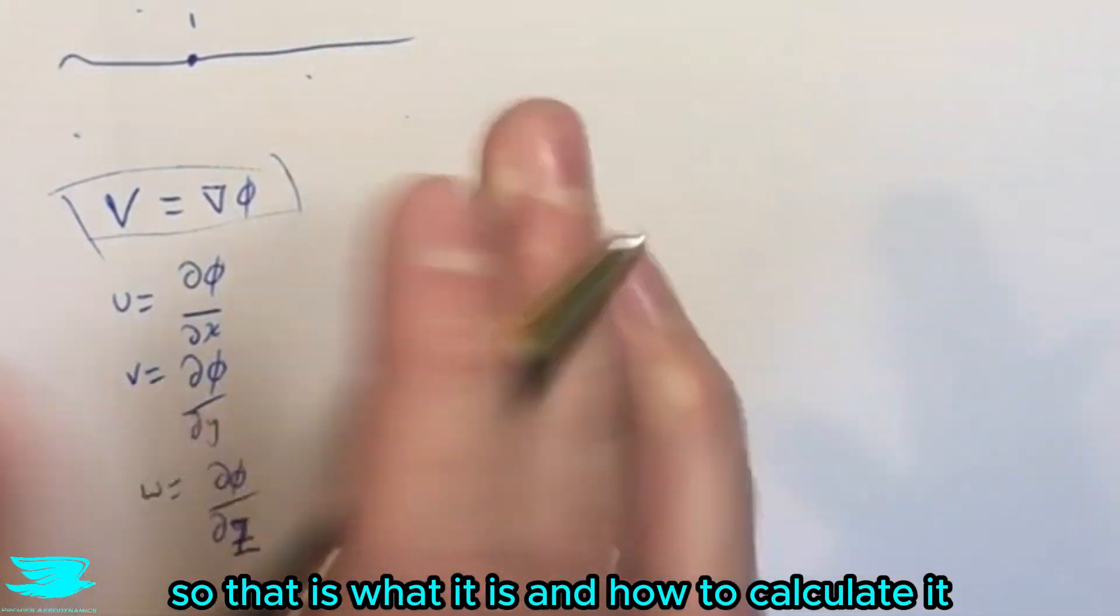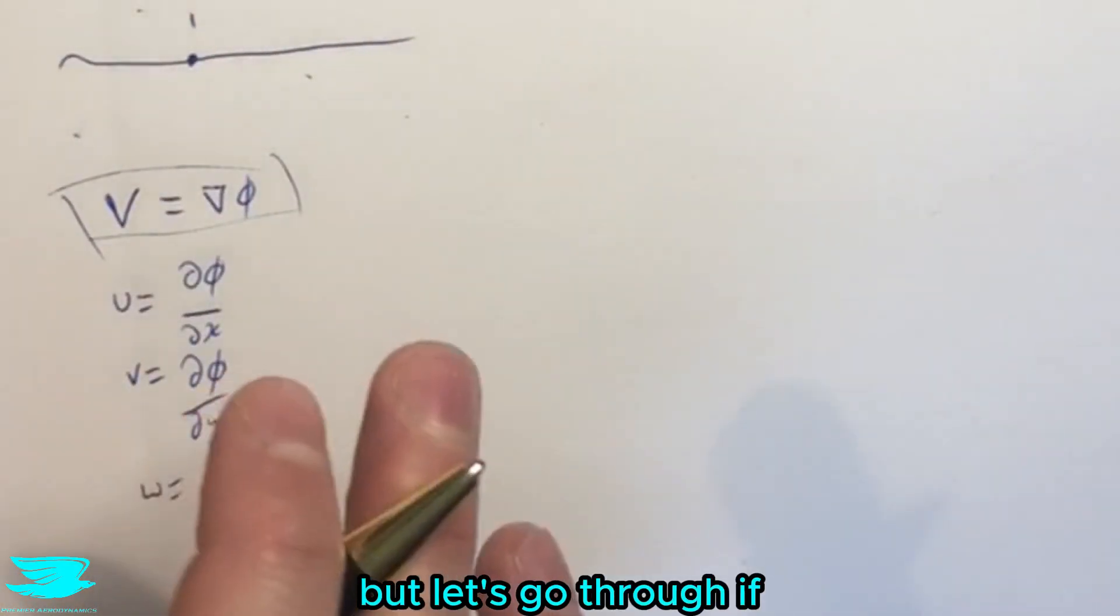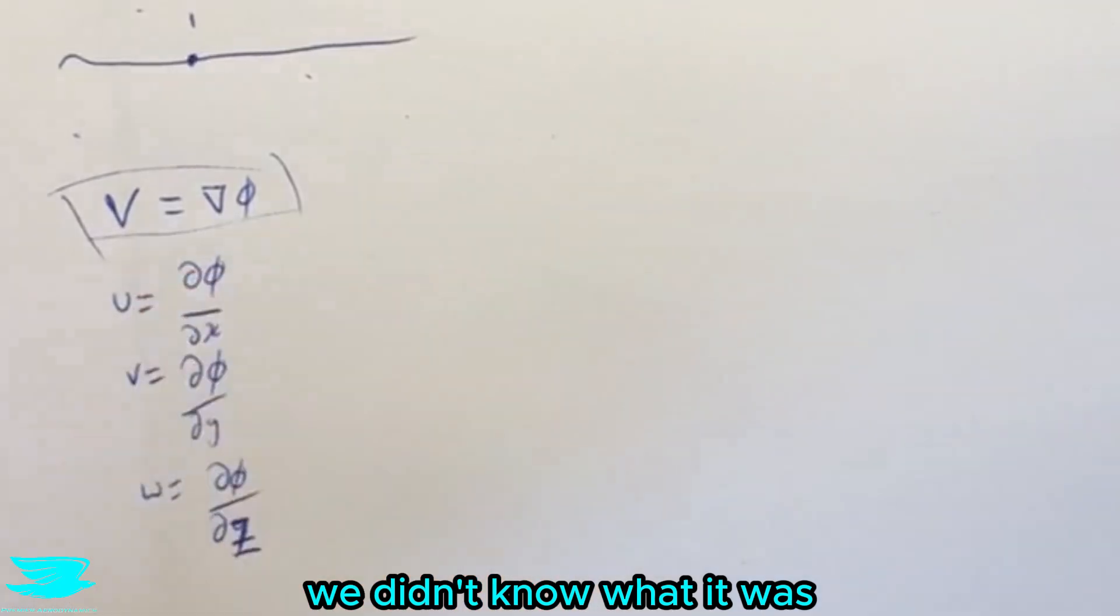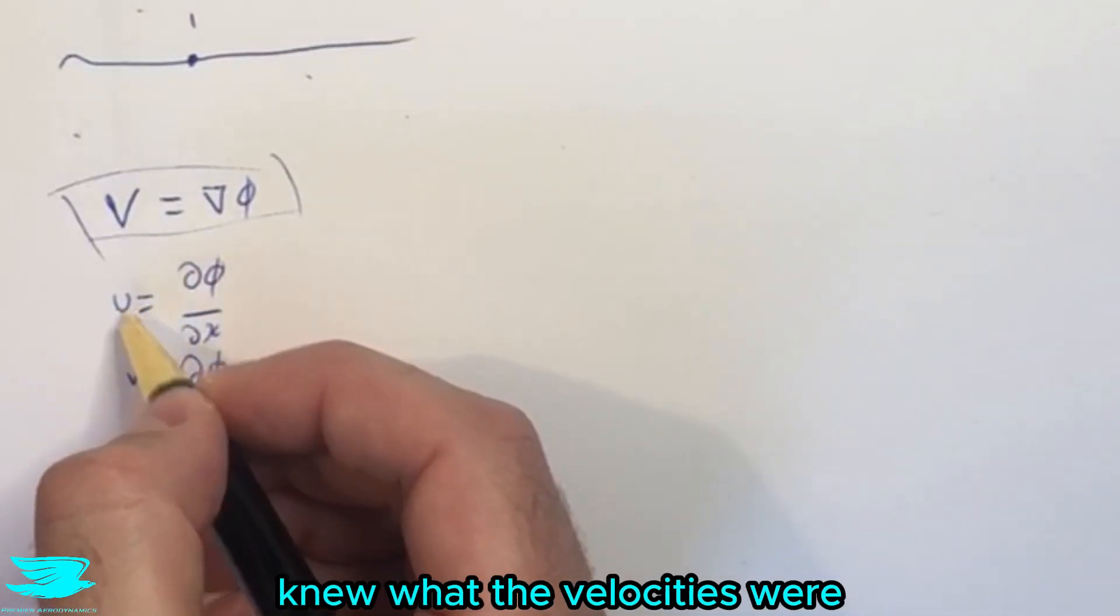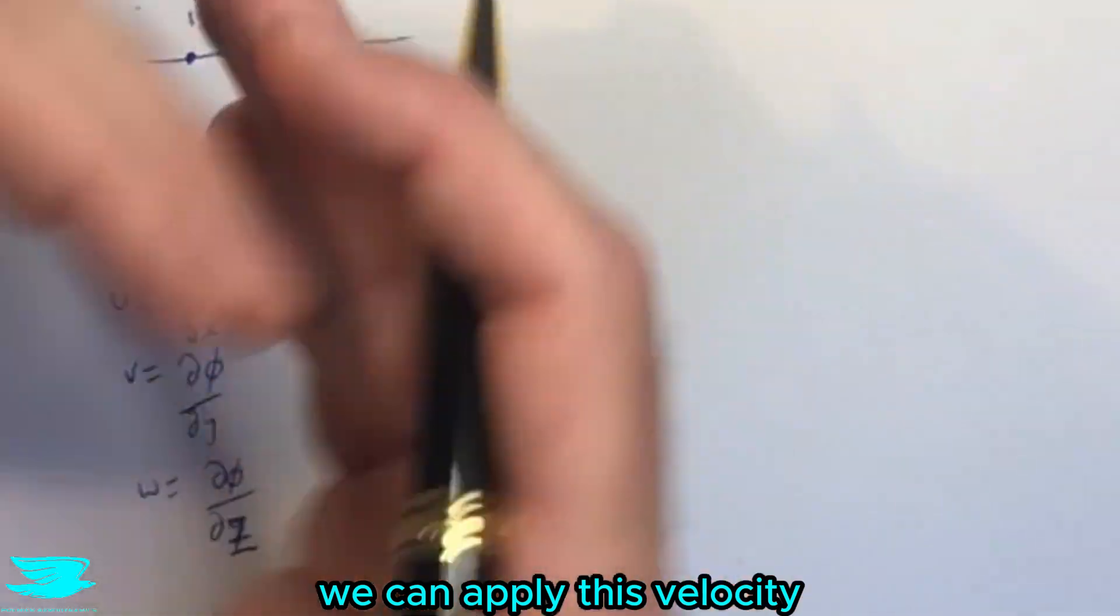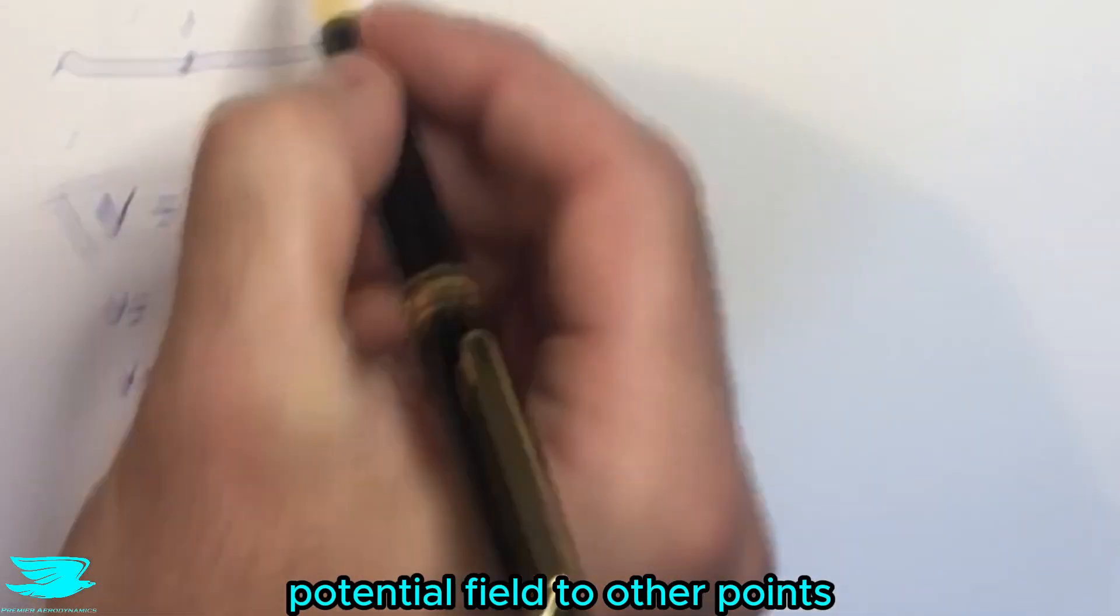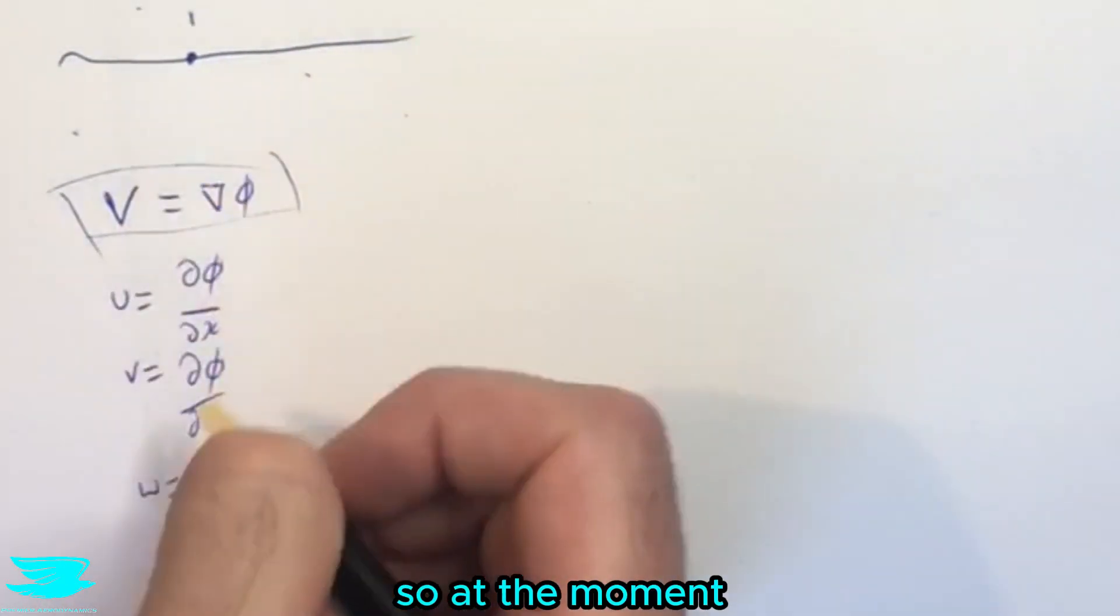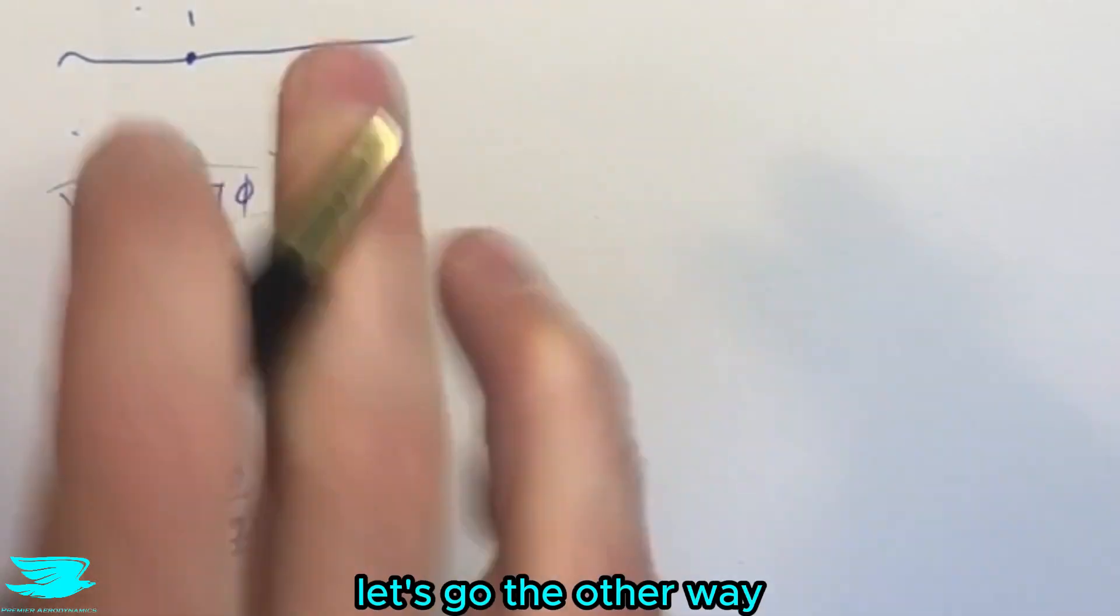So that is what it is and how to calculate it, but let's go through if we didn't know what it was. So let's say we actually knew what the velocities were and we're trying to work backwards to find out what it is, then we can apply this velocity potential field to other points. So at the moment it's quite easy to find what the velocities are. Let's go the other way.